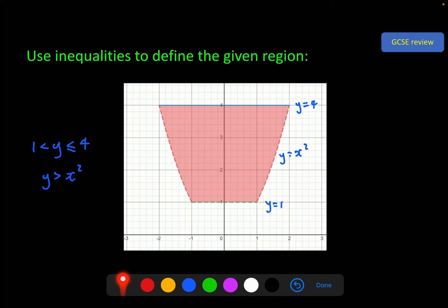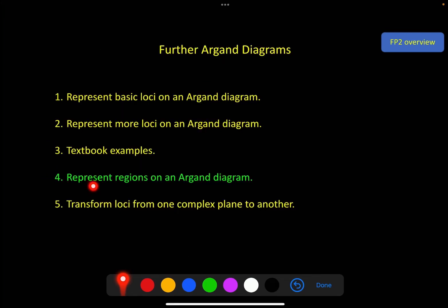We're going to use these ideas in this video, combining them with the complex numbers that we looked at in the previous few, to represent regions on an argand diagram. Now this covers two sections in the textbook, because it's using all of the loci that we've already looked at. These should be quite familiar to you.